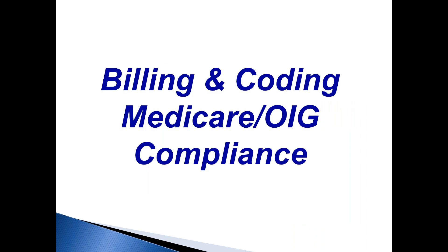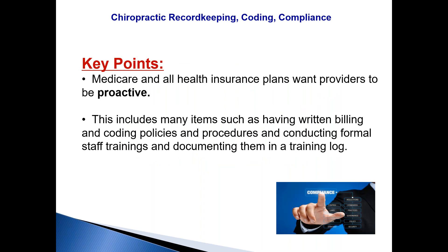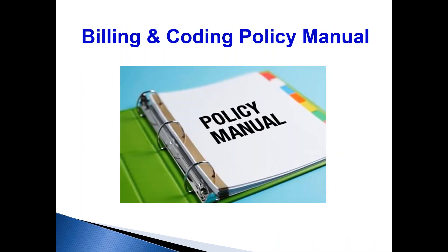A little bit on billing and coding compliance. Medicare and all your insurance companies want you to be proactive. If you're dealing with ASH — American Specialty Health — you are required to be proactive. Medicare requires you to have a written policy and procedure manual, a billing and coding policy. Even if you don't see Medicare patients, you should have a billing and coding policy manual. This is for the staff — so your staff members don't become disgruntled employees and report you to the board. It protects your business.